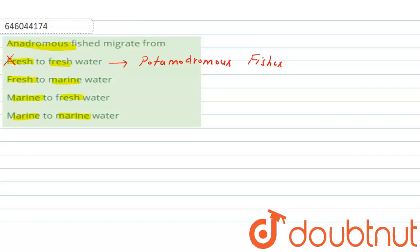The next option is fresh to marine water. The fishes that migrate from fresh to marine water are called Catadromus fishes, for example, Eel. So this option is also incorrect here.